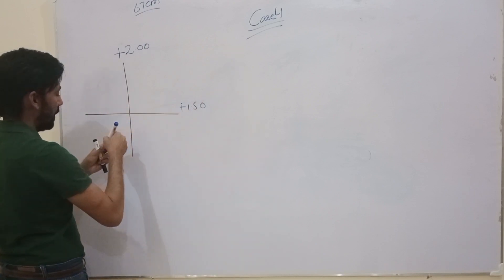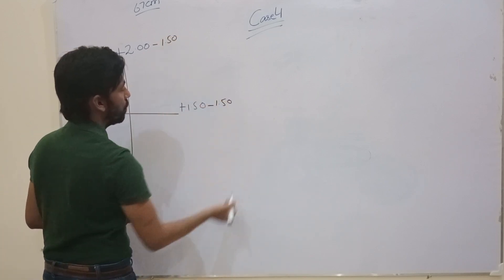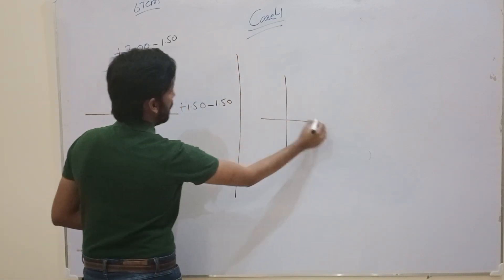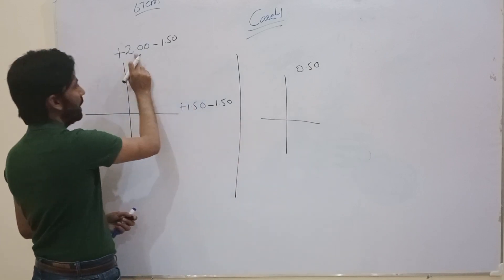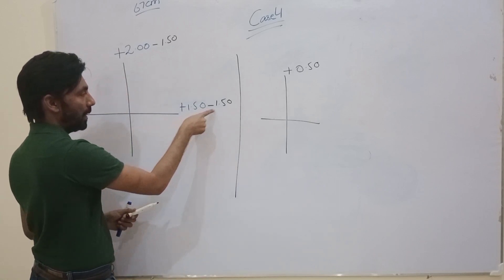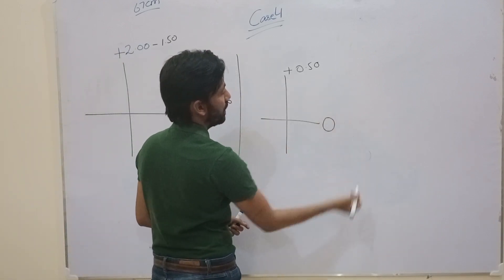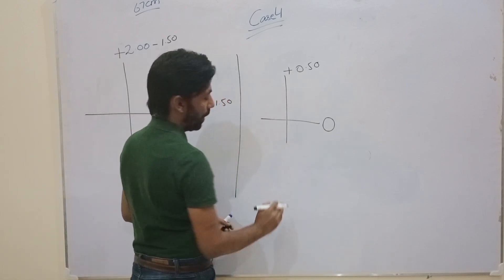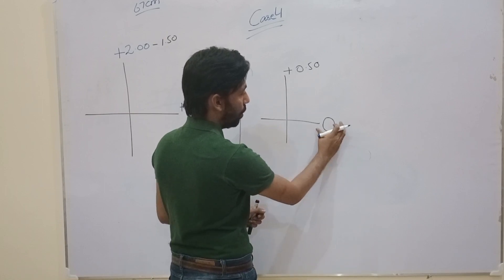Working distance is 67 cm, which is 1.5 diopters. Deducting 1.5 from +2: the final value is +0.5, since the sign belongs to the greater value. Deducting 1.5 from +1.5: the final value is 0. So now if we take 0 as our spherical correction, our sphere is 0.